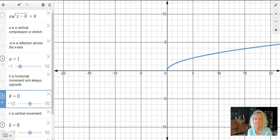When it comes to transformations for the square root function, a, h, and k all come back into the scene.